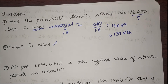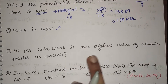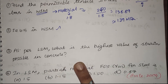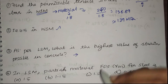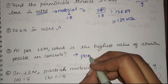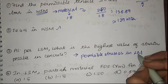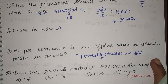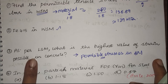Next: as per the limit state method, what is the highest value of strain possible in concrete? We have already discussed this point in this lecture. As a clue, based on this assumption only we will find the permissible stresses in limit state method. If you can recall that assumption, you can find the answer — I want you to try it and comment your answers below.